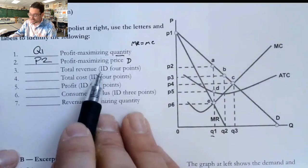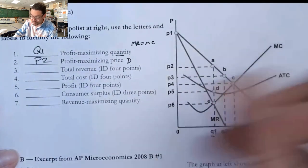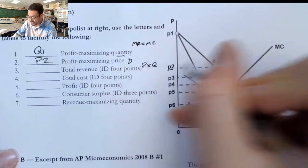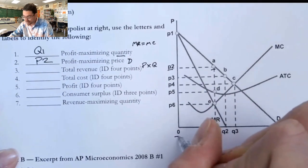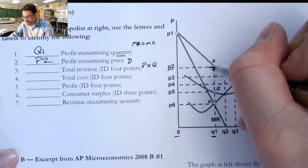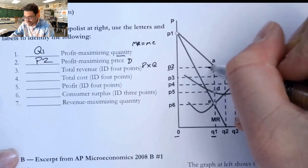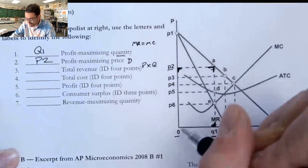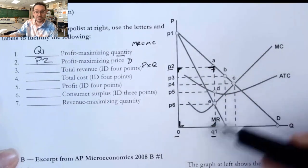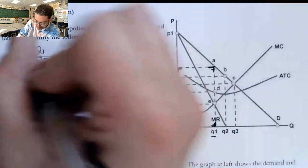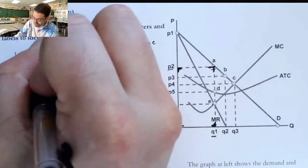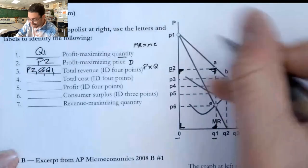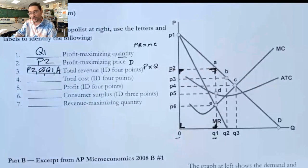Total revenue ID four points. So it's going to be the equivalent of price times the quantity. So it's going to be this P2 that we just identified all the way to A over to Q1 and zero. So if you're thinking about total revenue, and I probably should use a different color pen here, it's this big box right here, the great big box that I'm hashing in a little bit because that's the equivalent of price times quantity. So I'm going to use P2 zero because it goes all the way down to the bottom over to Q1, Q1, and then up to A.